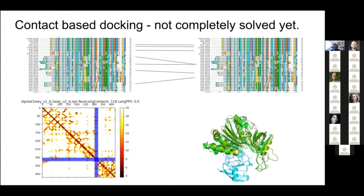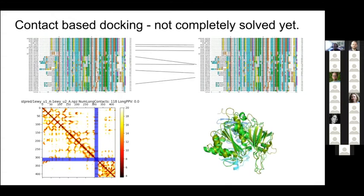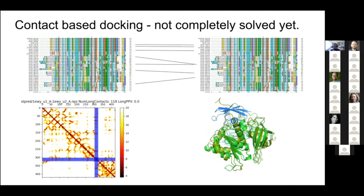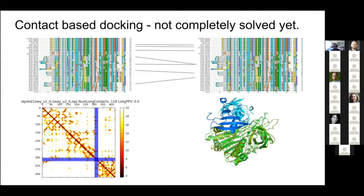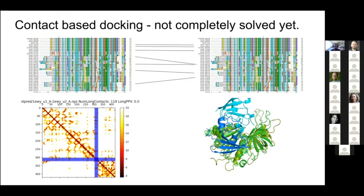In principle, if two proteins are interacting in an evolutionarily conserved way, you should have co-evolutionary signals in the interaction interface — at least if the interaction is conserved. If you have a mutation from positive charge in one protein, it should be compensated by a change to negative charge in the other.